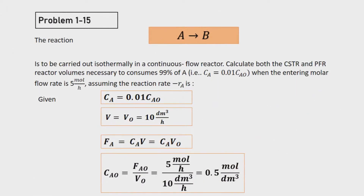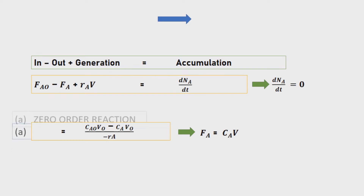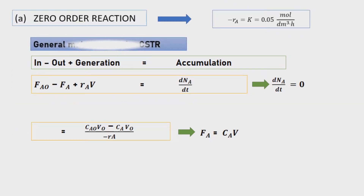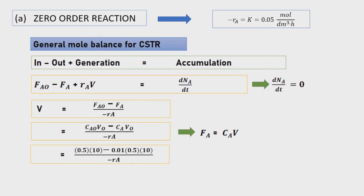Hello everyone. This video is basically about solving a problem involving rate of reaction to find the volume of CSTR and PFR. Question A involves zero order of reaction, where negative Ra equals K equals 0.05 mole per decimeter cubed.